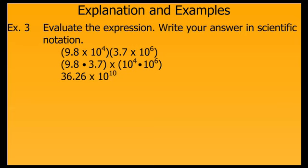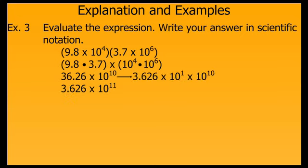Be careful — this is not yet in scientific notation because 36.26 is not a number between 1 and 10. So we need to move the decimal between the 3 and the 6, which is one more 10 to the left. That means our power of 10 increases by 1 to 10 to the 11th. Now this is in scientific notation: 3.626 times 10 to the 11th.